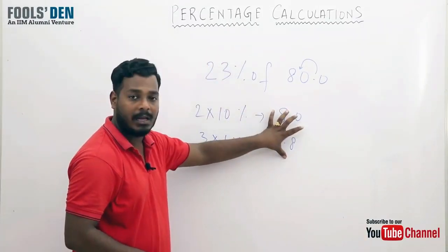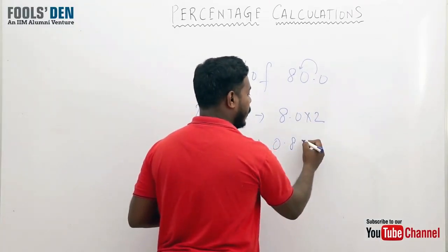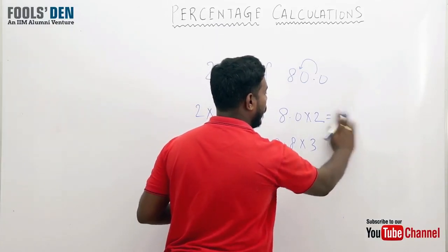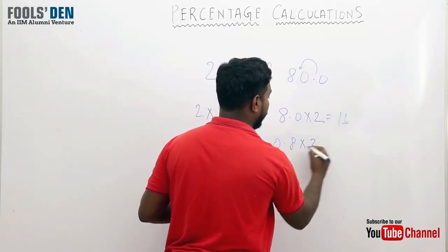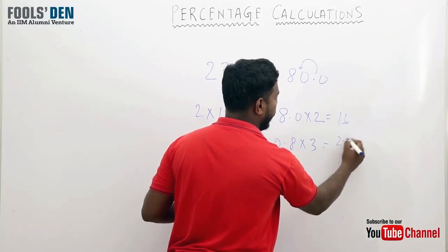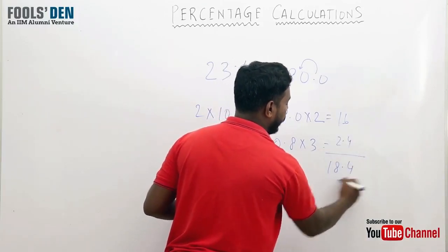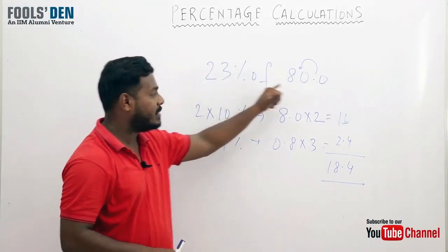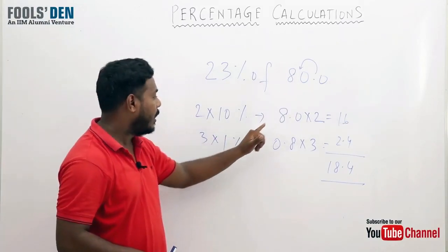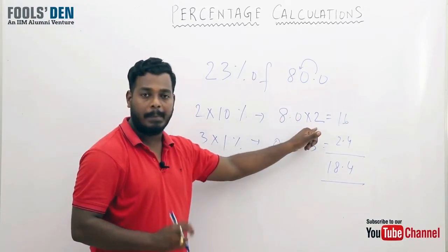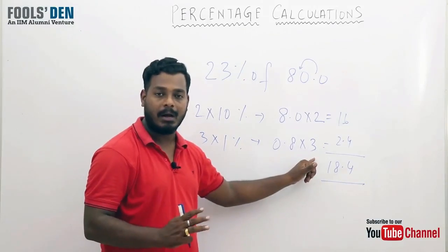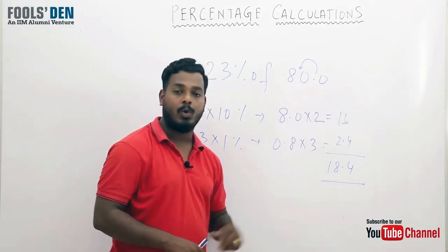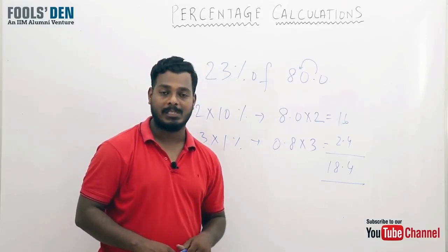The same thing I need to do here. Take 8.0 twice and 0.8 three times. If I add both, let's see how much it is. 8 into 2 is 16, and 0.8 into 3 is 2.4, so the sum would be 18.4. This is 23 percent of this number. I calculated by taking 10 percent twice (20 percent) and 1 percent three times (3 percent), total 20 plus 3, 23 percent.